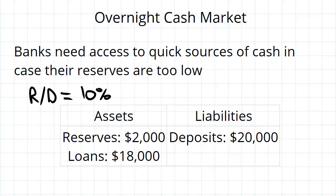But if withdrawals are too high and it doesn't have sufficient reserves to actually be able to give cash to all of those customers, then it could be a very bad situation for the bank. Customers are naturally going to get extremely angry if they cannot take their money out, then it'll get into the news and there'll be a lot of bad press and it can end up going very badly. But at 10% we'll say that this bank is happy.